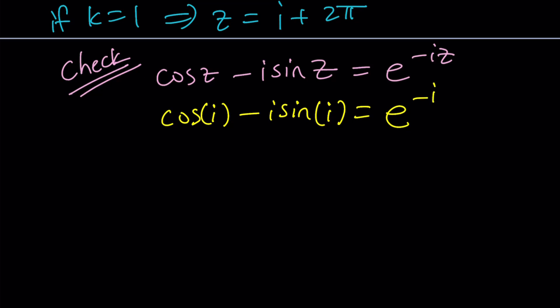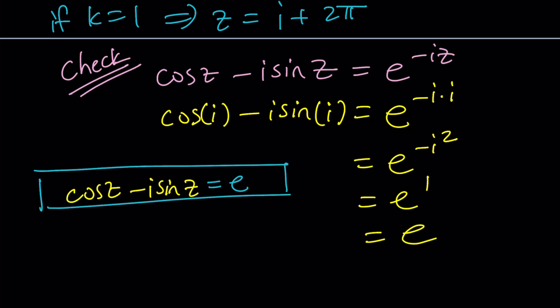This is e to the power negative i squared but i squared is negative one, therefore this is e to the power one and the answer is e, the Euler's number, but that would be the answer. In other words our solution checks, check mark, because this was supposed to equal e and indeed i satisfies.